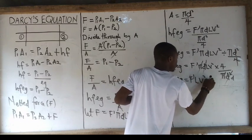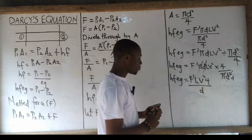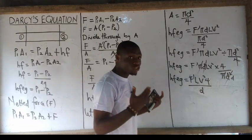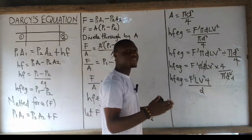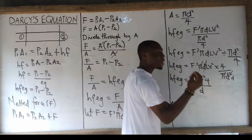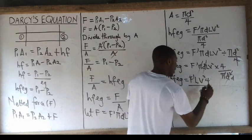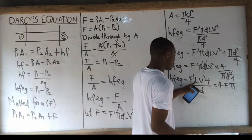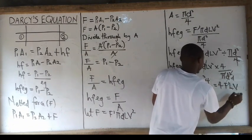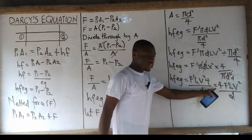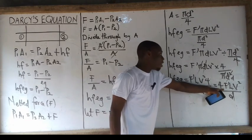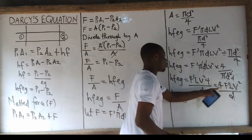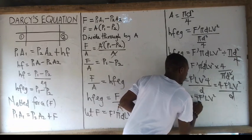So I have HF·ρg = 4·F'·L·V²/D. Numbers come before alphabets, so arranging properly gives HF·ρg = 4F'LV²/D. Taking ρg down to the other side, HF is now equal to 4F'LV² over ρg·D.